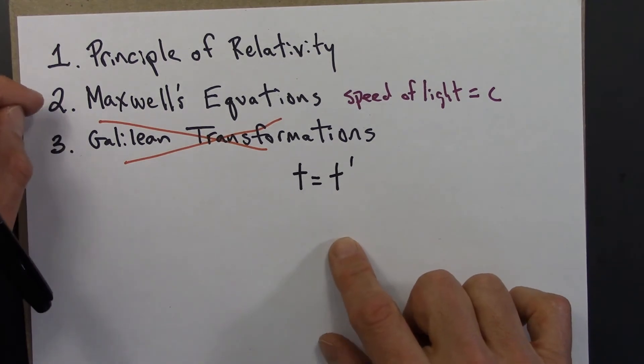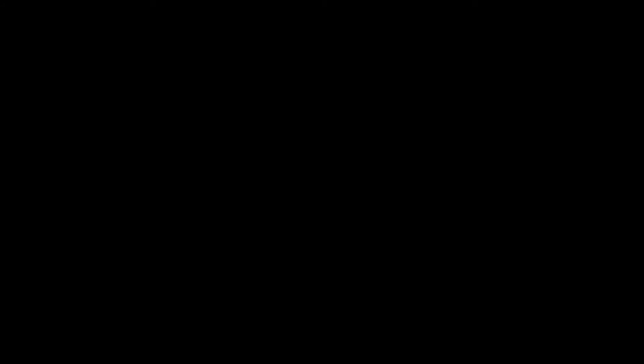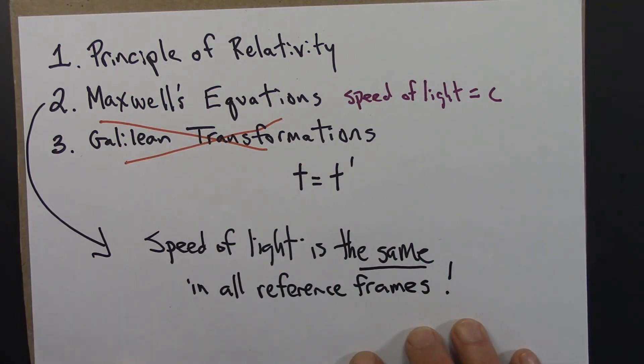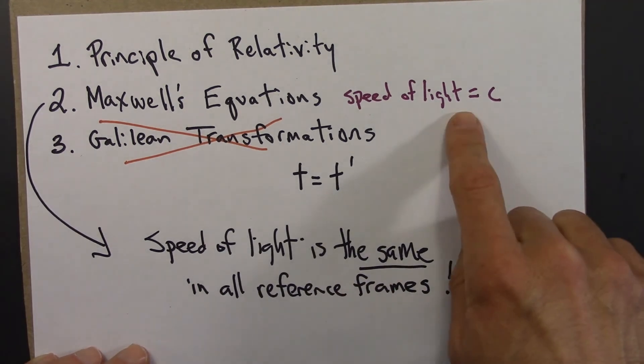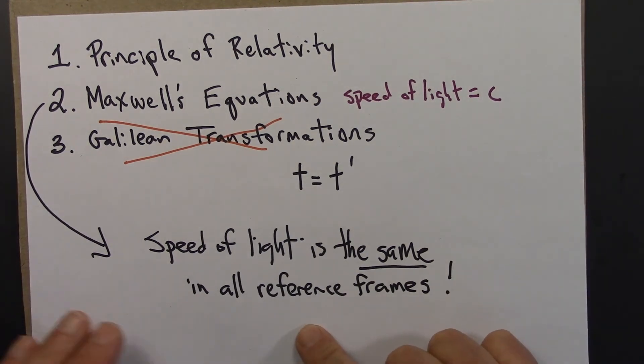And by saying that Maxwell's equations are right, that the speed of light is the same in all reference frames. After all, that's what Maxwell's equation says. It says the speed of light is the speed of light. So Einstein states very clearly, the speed of light is the same in all reference frames.